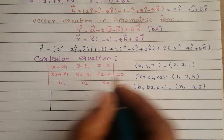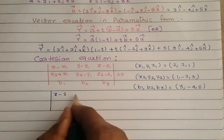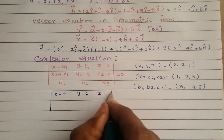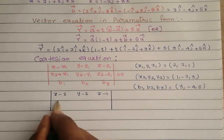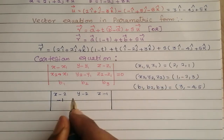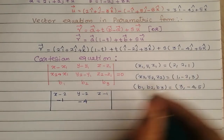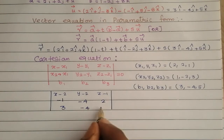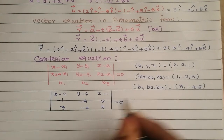Applying the determinant: the first row is (x - 2, y - 2, z - 1), the second row is (1 - 2, -2 - 2, 3 - 1) = (-1, -4, 2), and the third row is (3, -4, 5), equal to 0.